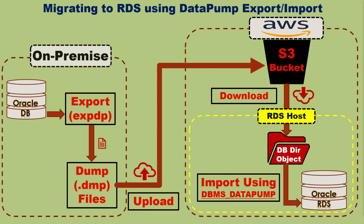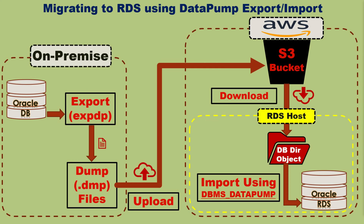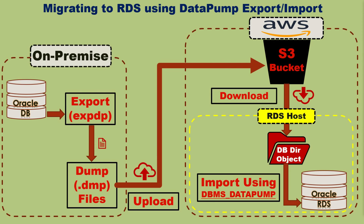Once the upload to S3 is complete, we will download the dump file from S3 to a local file system in the RDS host using a database directory object that belongs to the RDS instance, because we cannot directly access the RDS host file system. Note that the RDS instance must have the S3 integration option enabled to download or upload files from S3. Once the dump file is available in the RDS host file system, we will import it to the RDS instance using the DBMS_DATA_PUMP package, which allows data pump export/import via PL/SQL code.